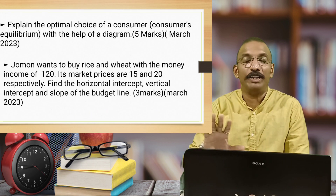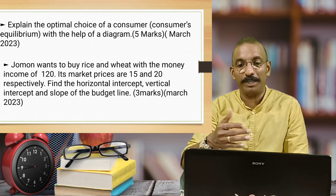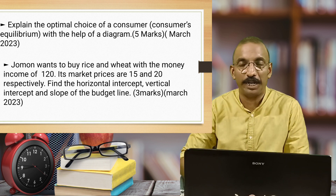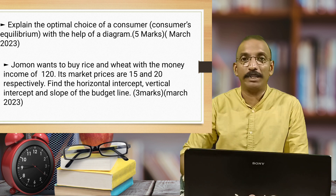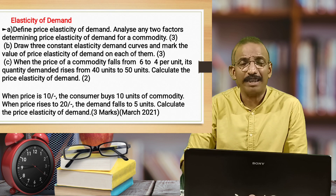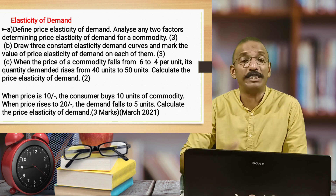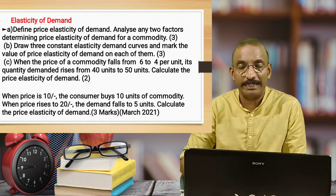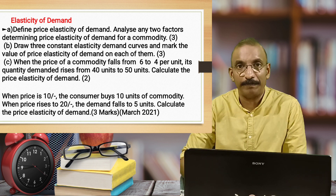Three different video classes are linked. You will have all these questions from different years — alternative items across different years. In the second chapter, we will discuss two main topics: one is the budget line, one is the consumer equilibrium, and the third main topic is the elasticity of demand. We have almost six classes across three different videos.